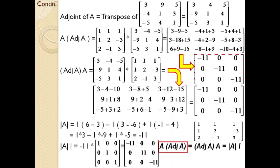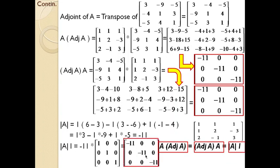Looking at all three results — A × adj(A), adj(A) × A, and |A| · I — all three matrices are the same. So we can say that the theorem we were asked to verify is correct and it is proved. This is how you deal with the adjoint cases that come under matrices. We have learned the adjoint of a matrix, how to find it, and how to verify the associated theorem. We will discuss further cases in the coming session. That is all for today. Thank you.